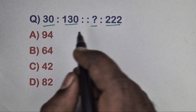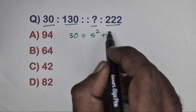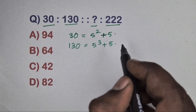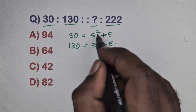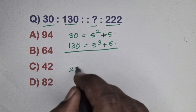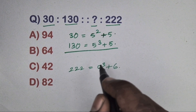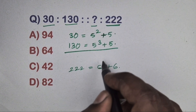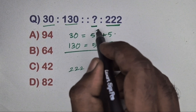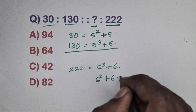Next question: 30 is related to 130 and which number is related to 122? Take 30 — write as 5 squared plus 5, and 130 equals 5 cubed plus 5. The same number 5 is used. For 122, write it as 6 cubed plus 6. Since the second number uses cube, the first number uses square. So 6 squared plus 6 equals 36 plus 6 equals 42. Option D is the correct answer.